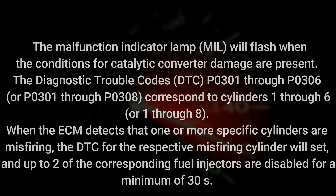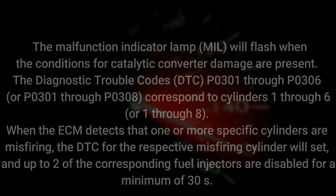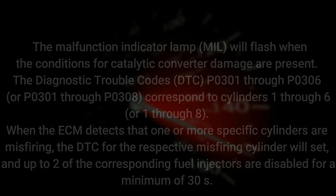The diagnostic trouble codes (DTC) P0301 through P0306, or P0301 through P0308, correspond to cylinders 1 through 6 or 1 through 8. When the ECM detects that one or more specific cylinders are misfiring, the DTC for the respective misfiring cylinder will set, and up to 2 of the corresponding fuel injectors are disabled for a minimum of 30 seconds.